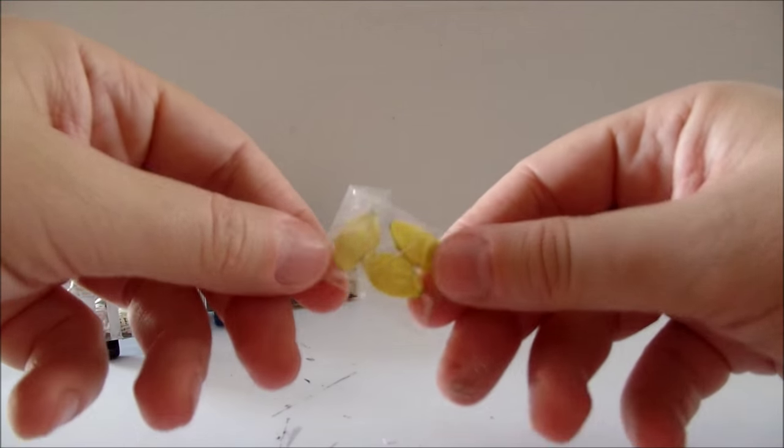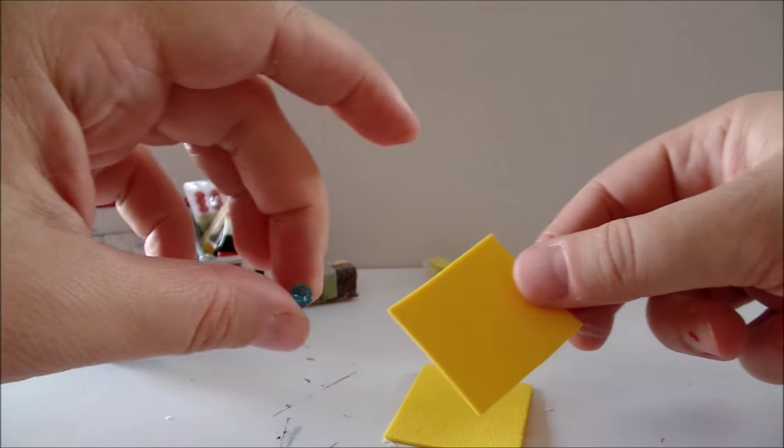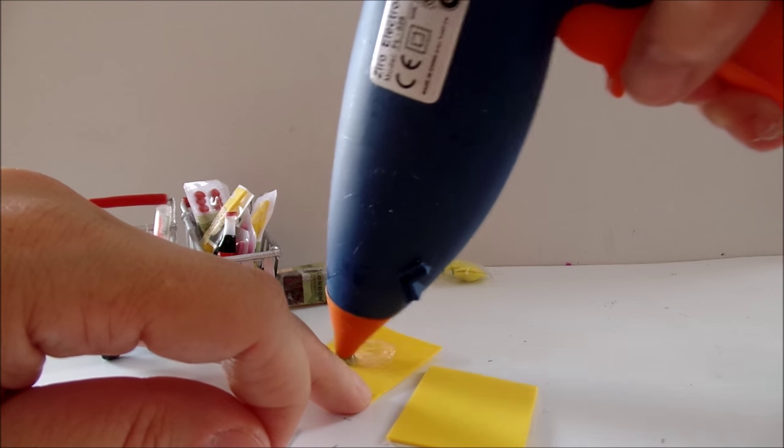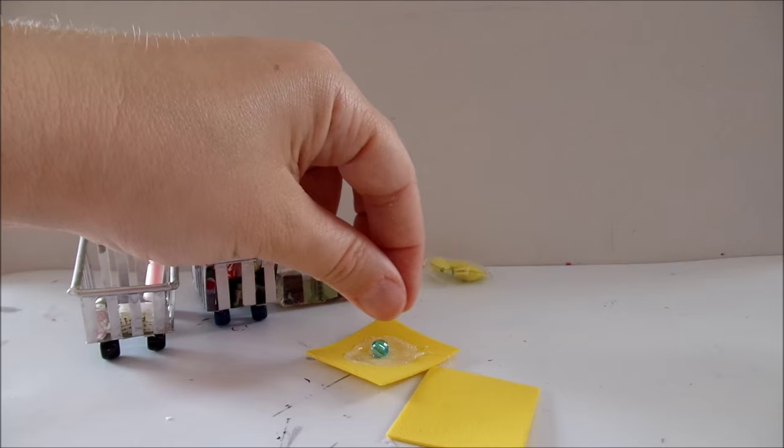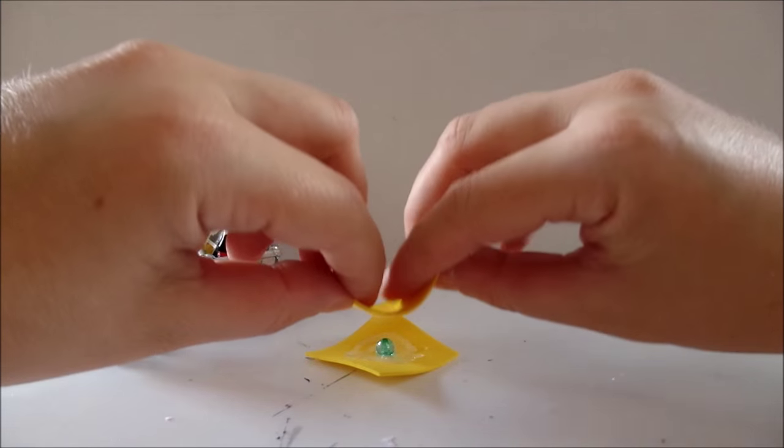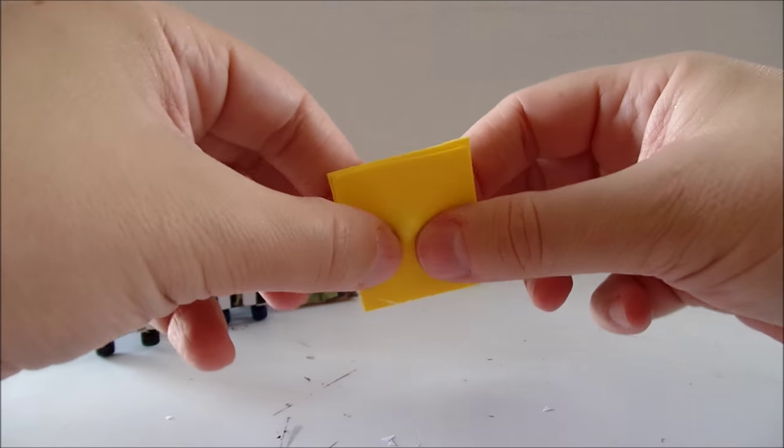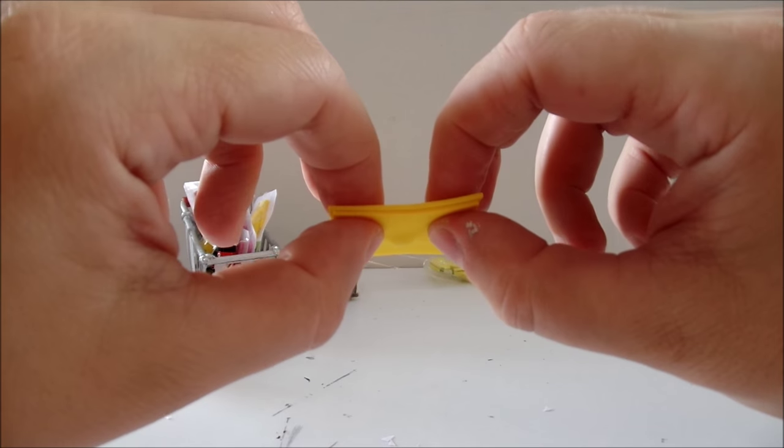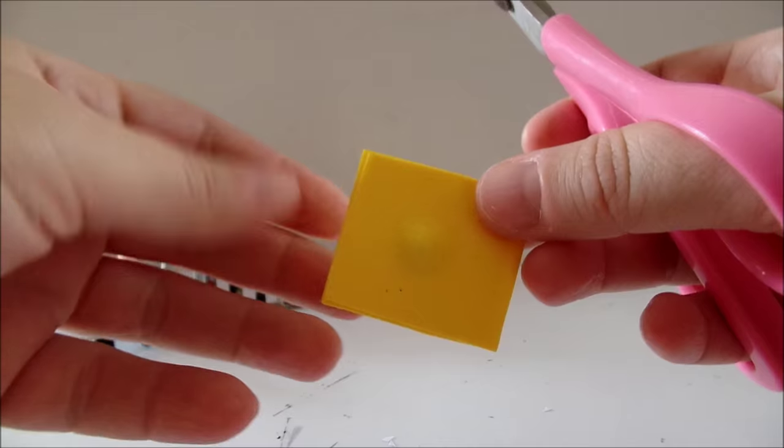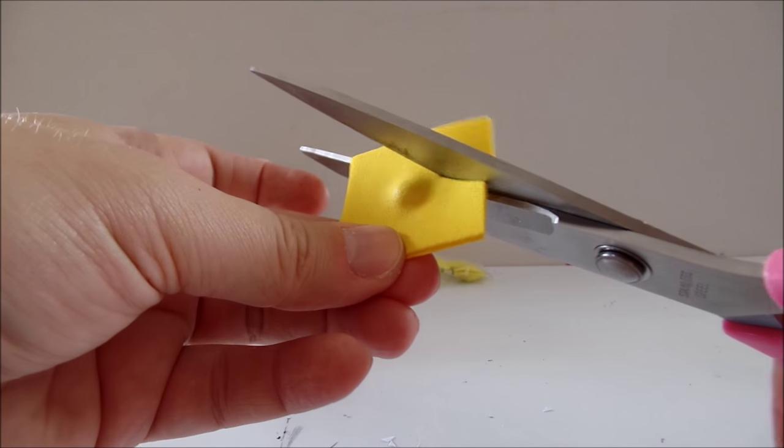To make this tiny lemons, take two pieces of foam and a small bead. Cover the one piece with hot glue. Place the bead in the middle. Add glue on the second piece and glue them together. And make sure the bead is in the middle. When the glue is dry, cut out a shape of a lemon.